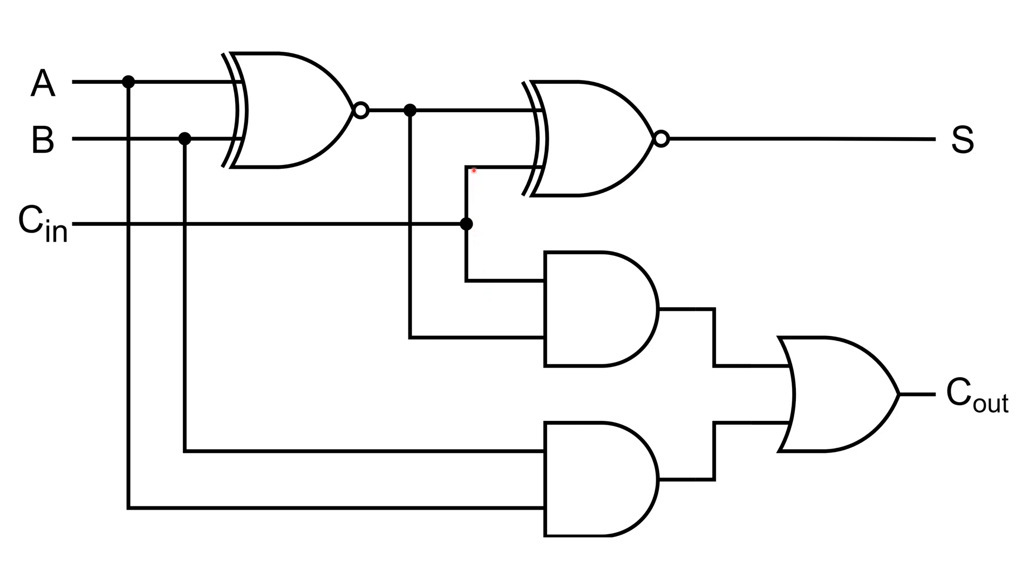This is the basic schematic for the full adder. We have two XNOR gates, two AND gates and an OR gate. We have inputs A and B and the carry in from the previous full adder, and we have the sum and the carry out to the next full adder.